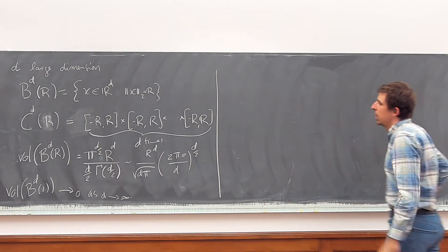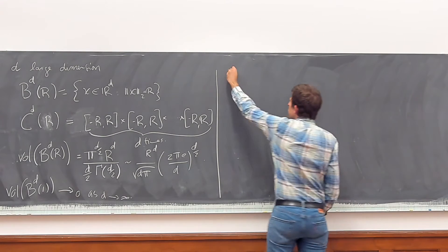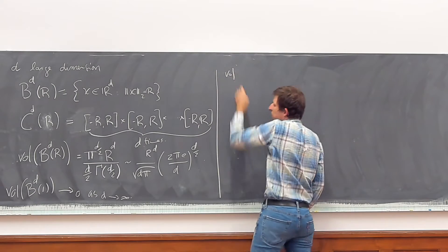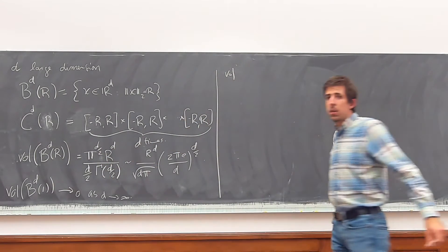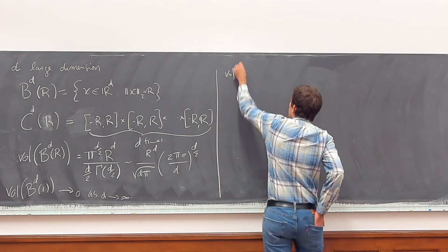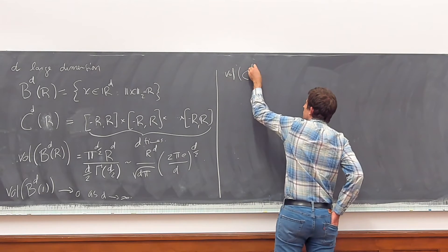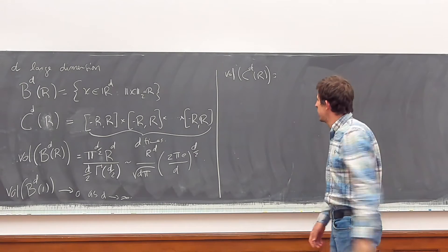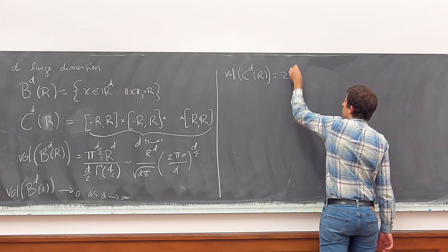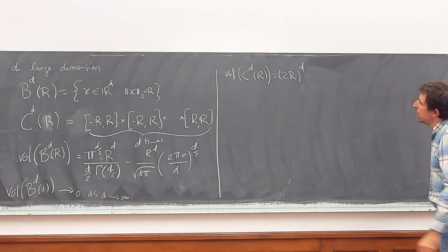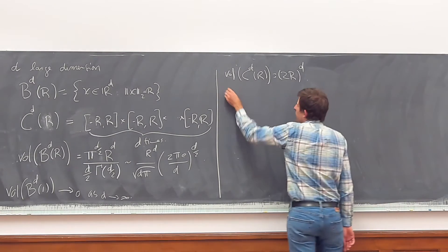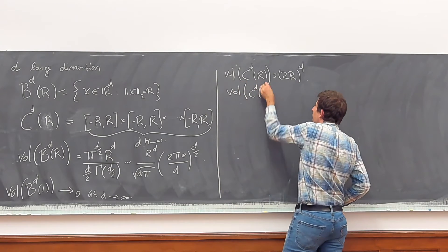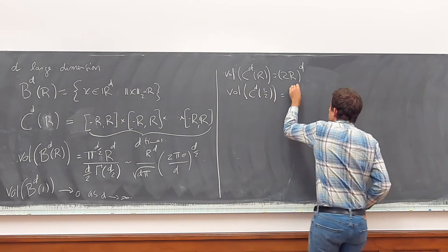The volume of the cube is also easy to compute — it's just (2R)^d. In particular, the volume of the cube C_d of radius 1/2 is always one, regardless of dimension.